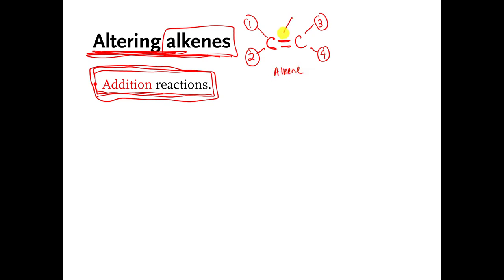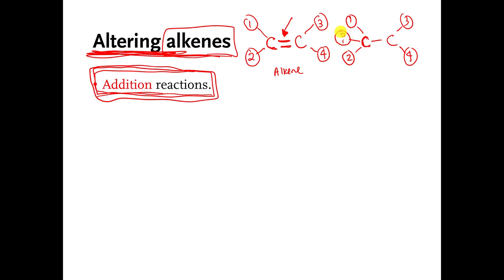Now imagine that I could somehow work some magic and take that double bond and break it and turn it into a carbon-carbon single bond. If I could do that, well, there's still going to be something stuck to positions one, two, three, and four, but this carbon needs a fourth attachment — it needs a fourth bond. So there's some mystery thing that I would have to attach there if I broke this double bond and turned it into a single bond.